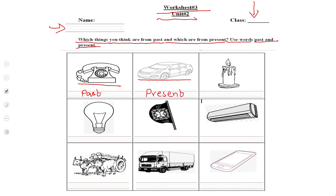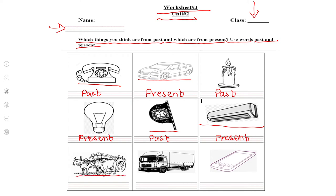We do not use candles for lighting nowadays, so write 'past.' We use electric bulbs now, so write 'present.' A hand fan — we do not use hand fans anymore; we use ceiling fans, so write 'past,' because there was no electricity at that time. Air conditioners were not in old times, so write 'present.' People used animals for picking up loads in the past — write 'past.' Nowadays trucks are used, so write 'present.' Mobile phones were not in the past — write 'present.'